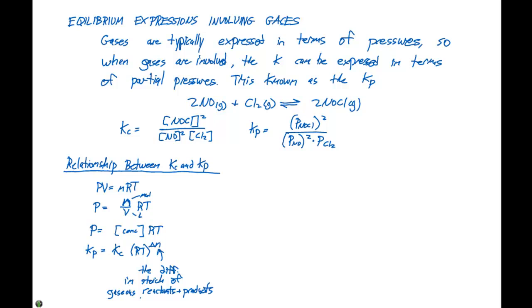And we'll express this as products minus reactants. So let's come back up here and look at this reaction where we have 2NO gas plus Cl2 gas in equilibrium with 2NOCl. We can say that on the reactant side we have three moles of gas, and on the product side, we only have two moles of gas. So our Kc and our Kp are going to be different.